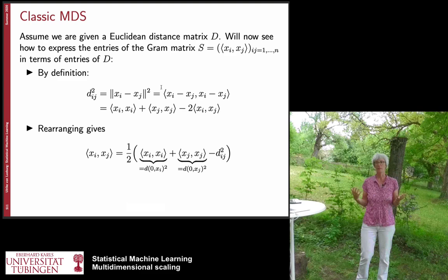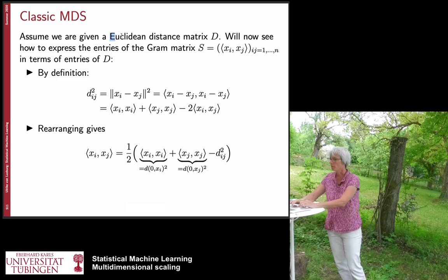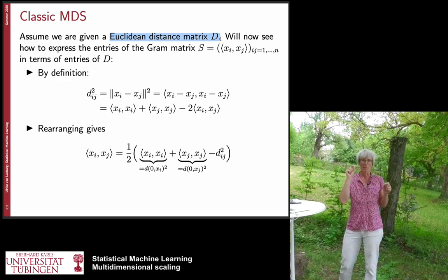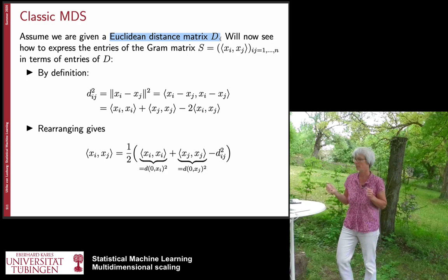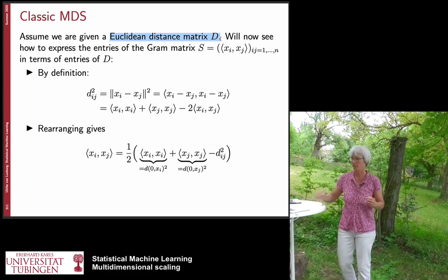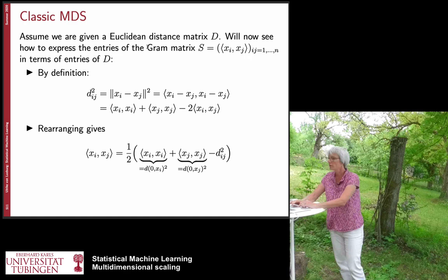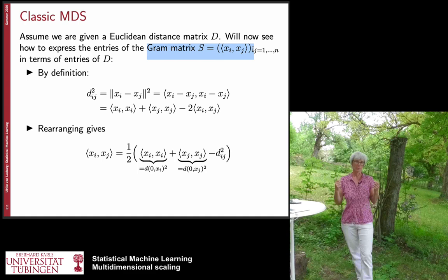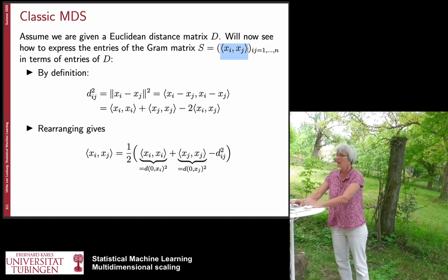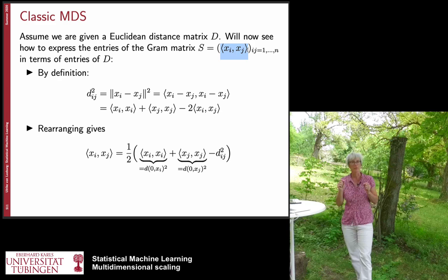We start with the classic algorithm, which is surprisingly simple. We assume we are given a Euclidean distance matrix D — meaning there is some background space, the points come from this space, and someone gives us the distances measured by Euclidean distance. The trick is to rewrite this distance matrix in a slightly different form. What we want to achieve is to express the entries of the Gram matrix — the scalar product matrix, or kernel matrix for the natural linear kernel — in terms of distances. Once we have the Gram matrix, we can decompose it and find the point configurations.